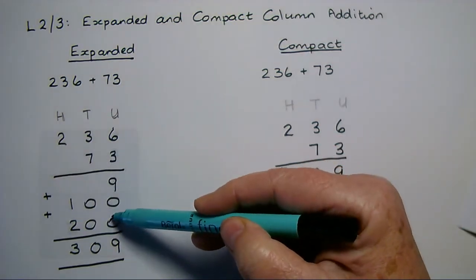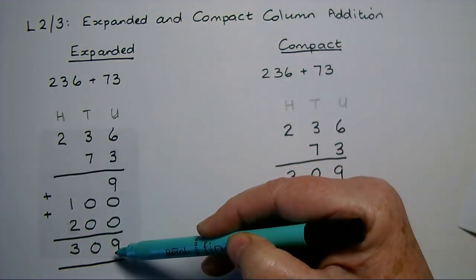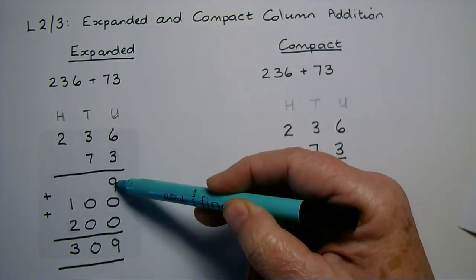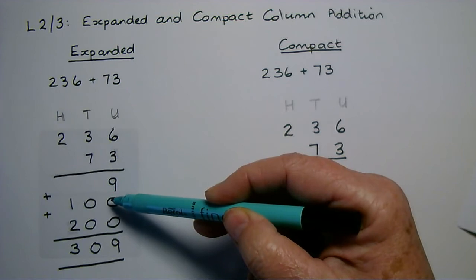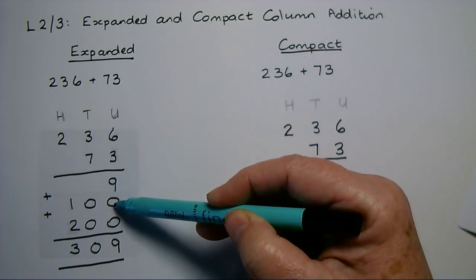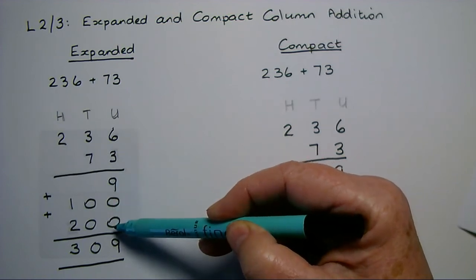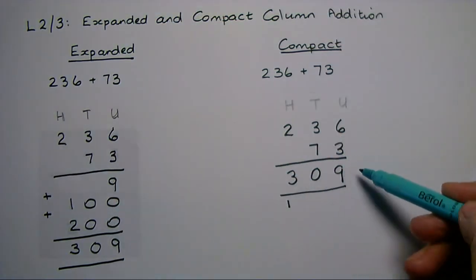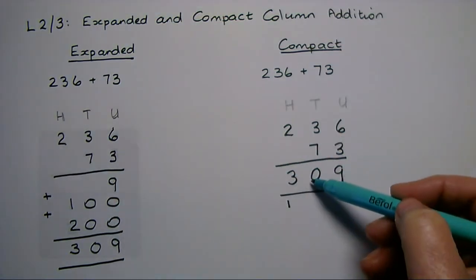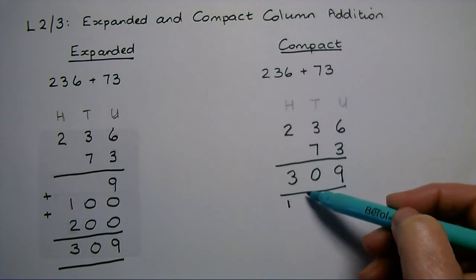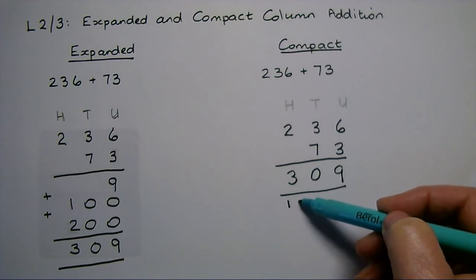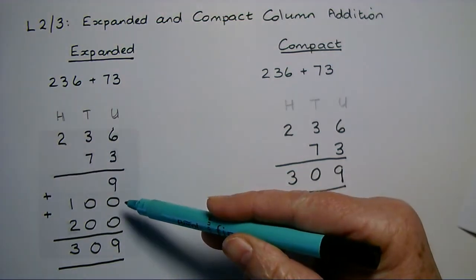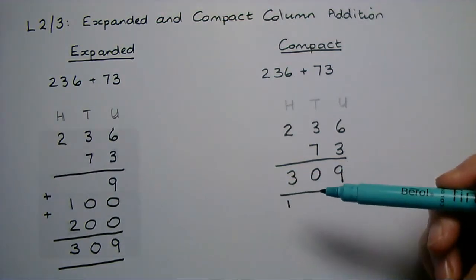In the expanded method, I'm splitting it out and partitioning it — doing the units first, then the tens, then the hundreds, and showing each part on its own line. In the compact method, I'm doing exactly the same but carrying instead of showing the 100 separately on its own line.